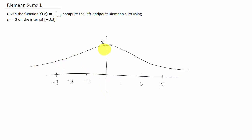Our function looks something like this. Now what we're going to do is we're going to split this interval from negative 3 to 3 up into 3 equal pieces. Why 3 equal pieces? Because n equals 3 in this problem. So one of these pieces is going to go from negative 3 to negative 1. Another piece is going to go from negative 1 to 1. And the last piece is going to go from 1 to 3. So we've created what we call 3 subintervals.